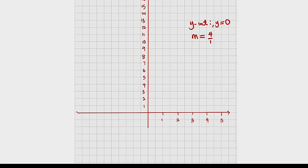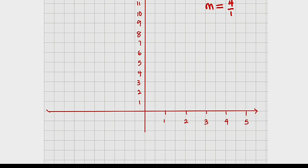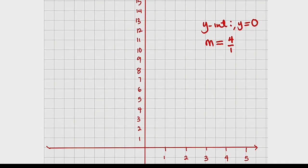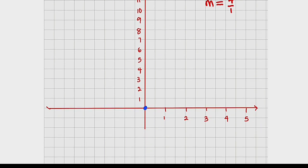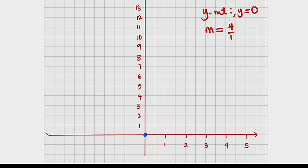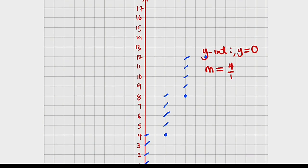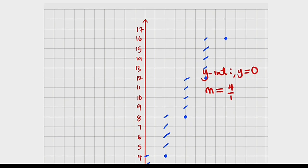The scale on the y-axis is one unit to represent one centimeter, but on the x-axis two centimeters represent a single point. Let's start by locating the y-intercept, which is zero, at the origin. Then for the slope, since four is positive we are moving up — four units above the y-intercept: one, two, three, four — then move to the right one unit. We have a point right here. Repeat the same process: one, two, three, four, then move right one unit.